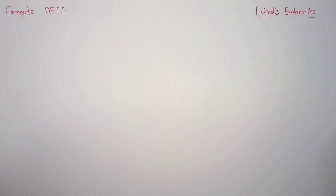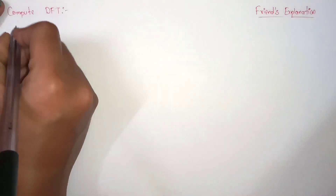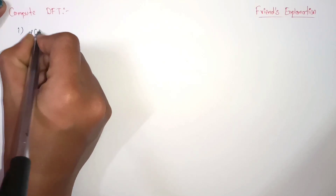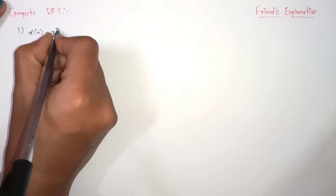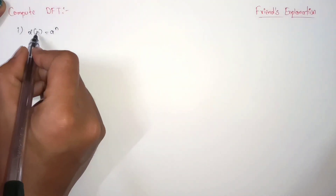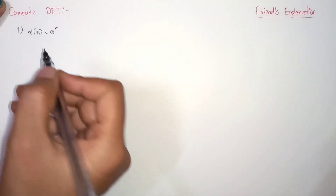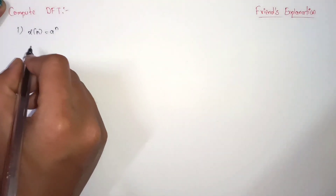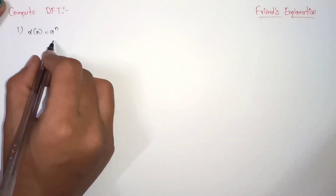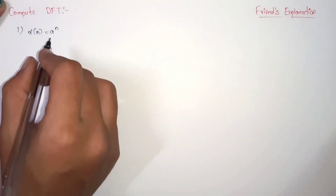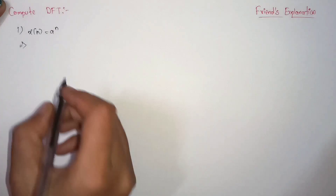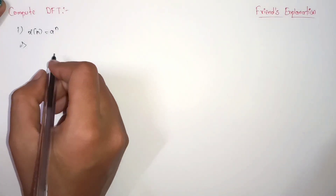First, we will take the signal x(n) equals a to the power of n. I'm taking the parameter as n because these are discrete. Now we are going to find out the Discrete Fourier Transform of this signal, as we saw in the previous video.